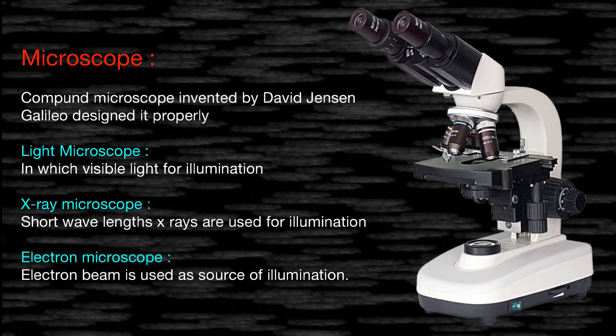Now, in this era we have three types of microscopes. Number one is the light microscope, which uses light for illumination. Number two is the X-ray microscope, which uses short wavelengths of X-rays as a form of illumination. Number three is the electron microscope, which uses an electron beam as a source of illumination. The compound microscope is still being used in universities and is now common among general users as well.